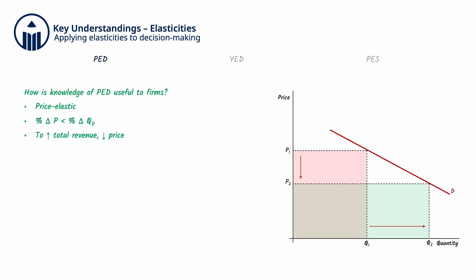And this is because the loss of revenue from lowering the price, which is this box here, will be smaller than the gain in revenue from the resulting increase in quantity demanded, which is this box right here.